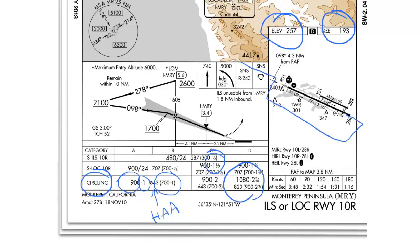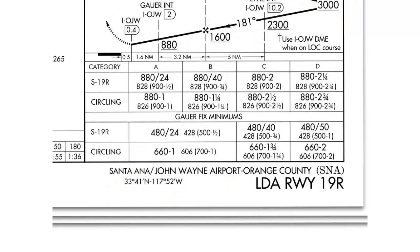Now let's look at a couple other instrument approach charts. This is the LDA runway 19R at John Wayne Airport in Orange County. The chart has the same format with our categories at the top and our approach types along the side. In this case, you'll see that the approach is divided into two sections. The top section has both the straight-in and circling approach, and the bottom section is labeled Gower Fix Minimums and has both the straight-in and circling approach as well. This indicates there are two separate sets of minimums depending on whether or not you can fix the Gower intersection. If you can fix that intersection, then you can come down lower on the approach.